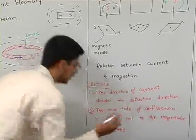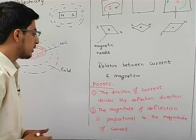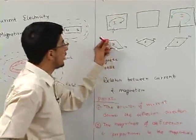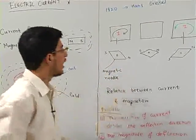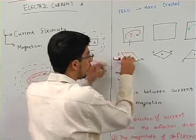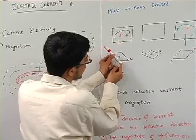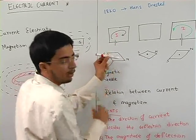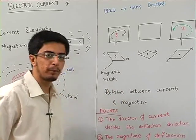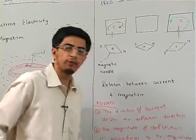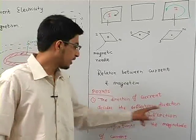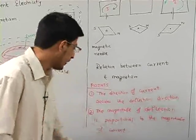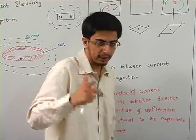The second point is that the magnitude of deflection is directly proportional to the magnitude of current. The greater my current, the greater my deflection. For example, if the current is very high, the deflection will also be quite large. If the current is very small, the deflection will be very small. These two points are very important: direction of current decides direction of deflection, and magnitude of deflection is proportional to magnitude of current.